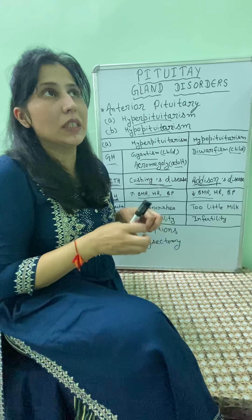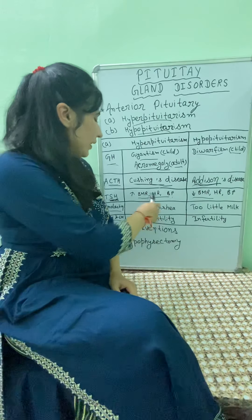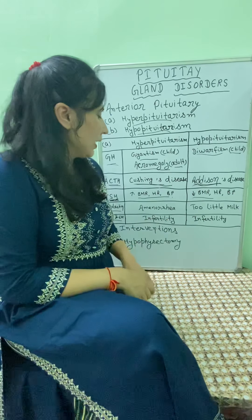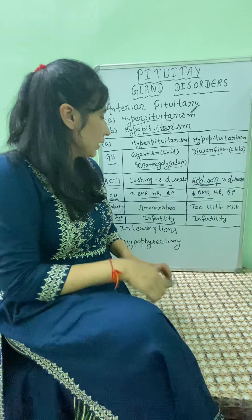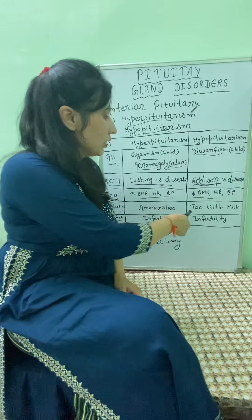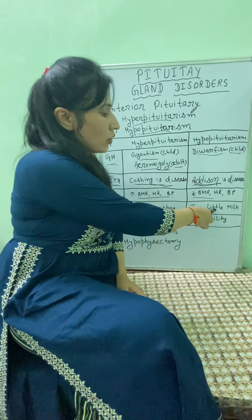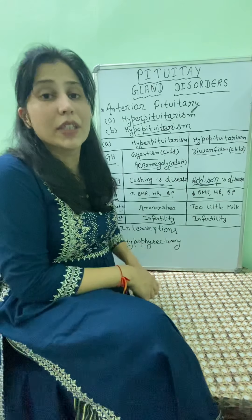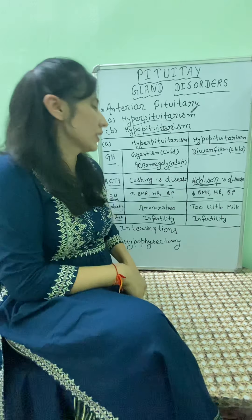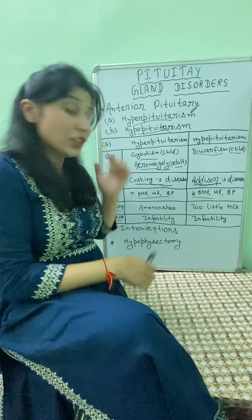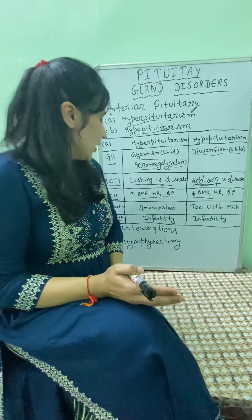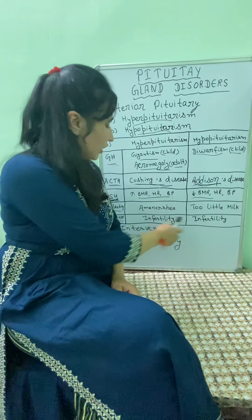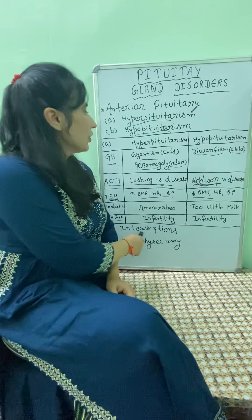Next is prolactin hormone. Prolactin can cause amenorrhea, and if prolactin hormone is low, it can cause insufficient milk production after pregnancy. After that, follicle stimulating hormone and luteinizing hormone help with fertility, and if they are low or high, it can cause infertility in both cases.